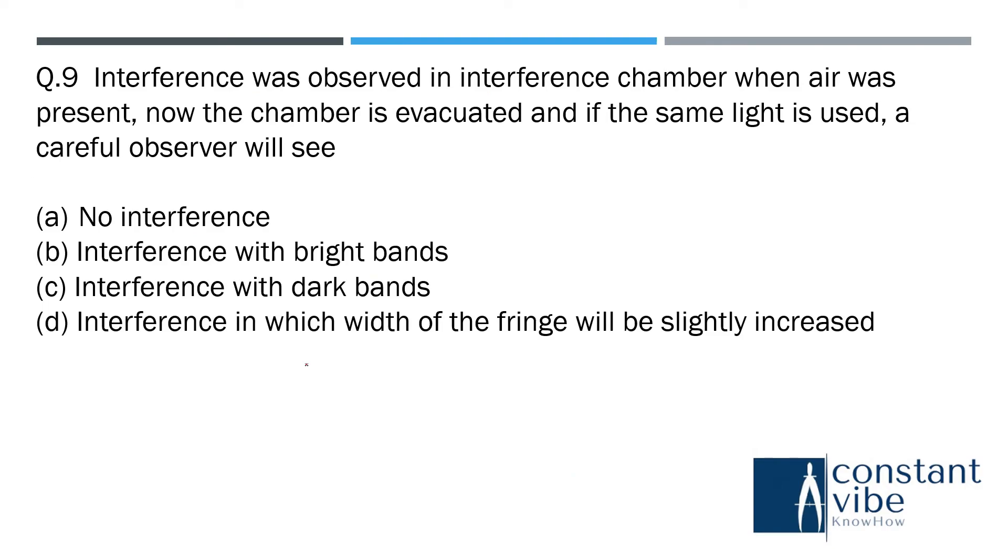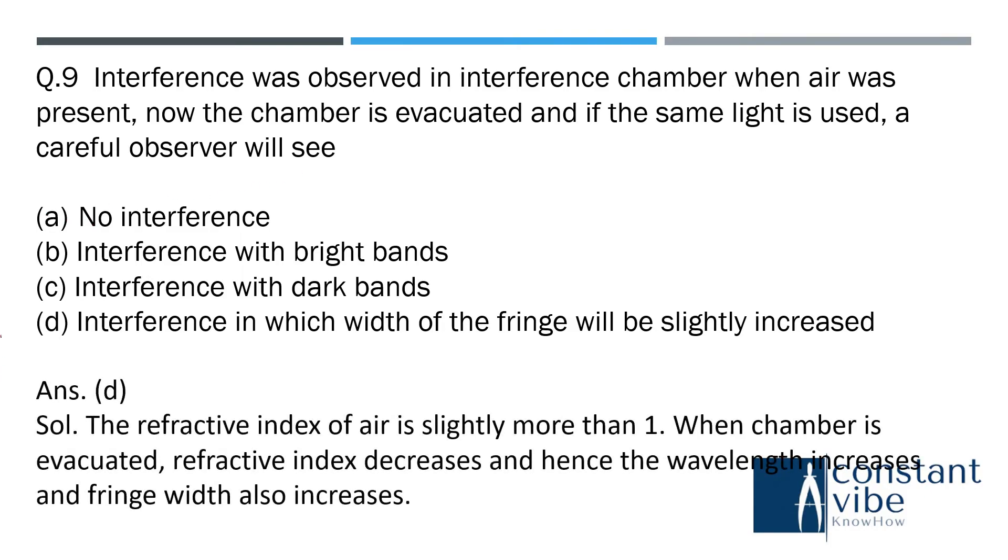Next question is question number 9. Interference was observed in the interference chamber when air was present. Now the chamber is evacuated. If the same setup is used, a careful observer will see. The answer is D here: interference in which width of the fringe will be slightly increased. Why it happened is the refractive index of air is slightly more than 1. When the chamber is evacuated in the vacuum state, refractive index decreases and hence the wavelength increases. This is the reason. So the answer is D.